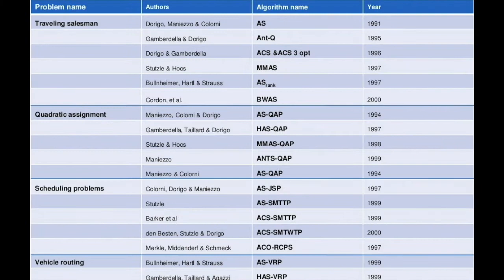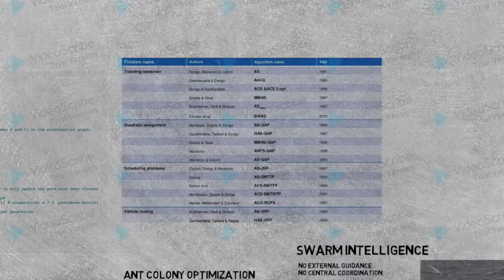And then lastly, there are two table summaries on what kind of problems ACO has been implemented to solve by other scholars. The tables show the algorithm name and the year.